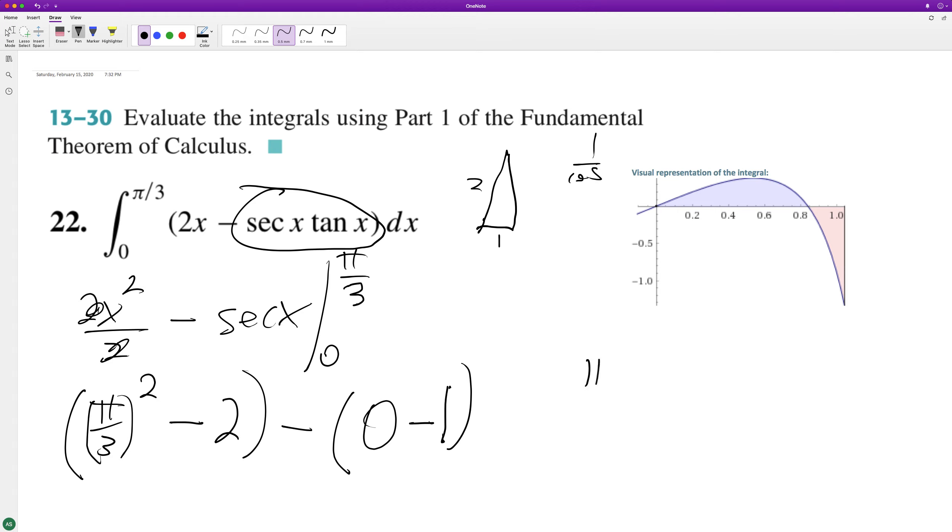So what we end up here with is pi squared over nine, because you square the numerator and denominator, and then minus two plus one. So it becomes minus one, and that's it.